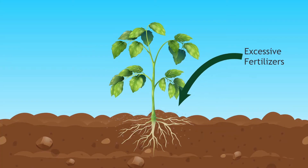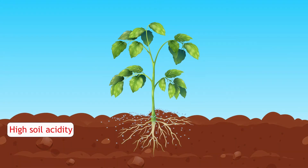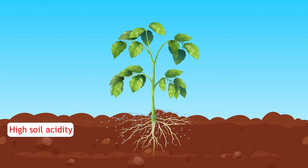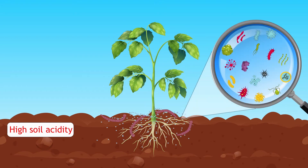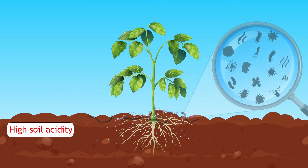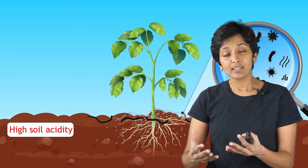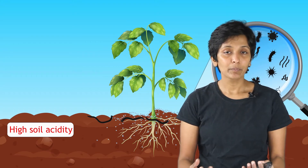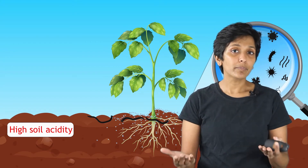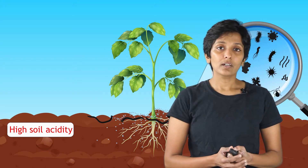The second side effect was soil pollution. The excess fertilizer that plants couldn't take up started increasing the acidity of the soil. Soil is also home to microbes and earthworms, which together provide an amazing ecosystem for plants to thrive. With increasing soil acidity, they were no longer able to survive.